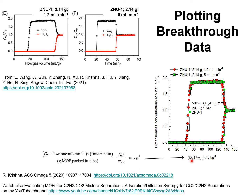The advantage of using this modified time parameter will be obvious in the next slide. To demonstrate its importance: these two sets of data, when plotted in this manner, reduce to a unique curve. So two different flow rates produced a unique curve, and that is a good indication of the reproducibility of the data. Even if different masses of adsorbent were used, use of this parameter would ensure that the breakthrough curves are uniquely determined.